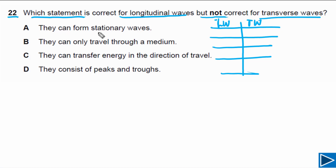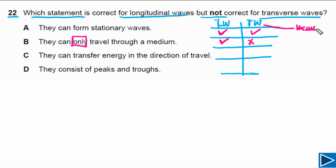Option A states they can form stationary waves — this is true for both transverse and longitudinal waves, so it's not the answer. Option B states they can only travel through a medium. That is 100% true for longitudinal waves, but it is not true for transverse waves because transverse waves can also travel through a vacuum. So option B is correct for longitudinal but not for transverse waves — the answer is B.